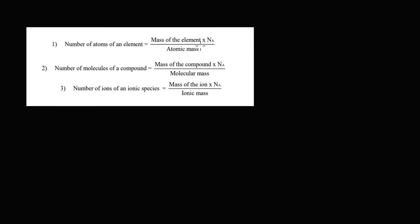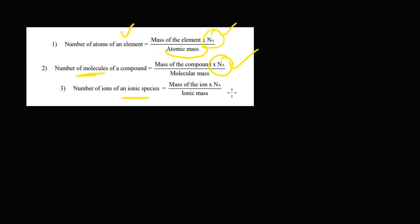Now if you want to find out the number of atoms in any given compound, whether it is an atom, molecule, or ionic species — the method is: take the mass of that element divided by its atomic mass, then multiply by Nₐ. Similarly, if you have a molecule, calculate the number of moles and multiply by Nₐ. If you have ionic species, similarly calculate the number of moles of ions and multiply by Nₐ.